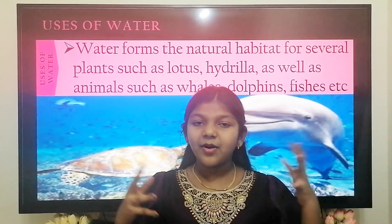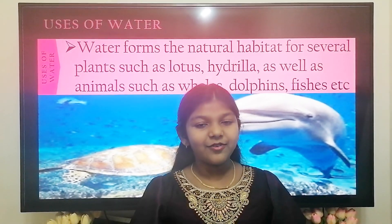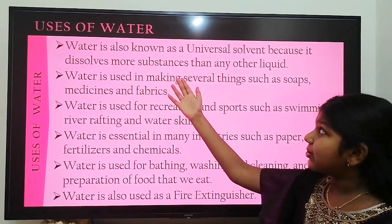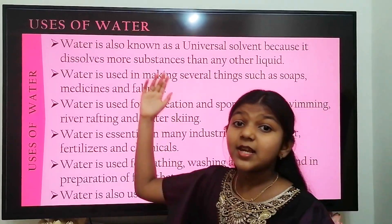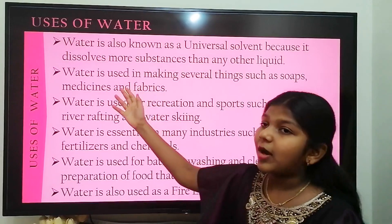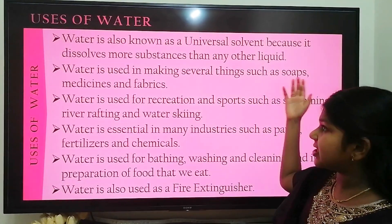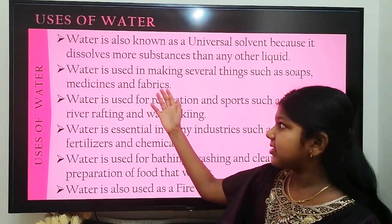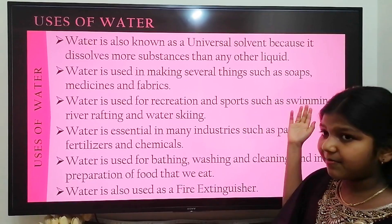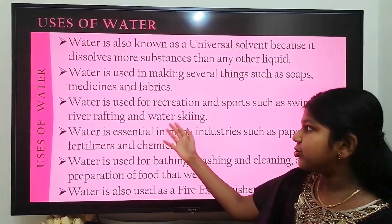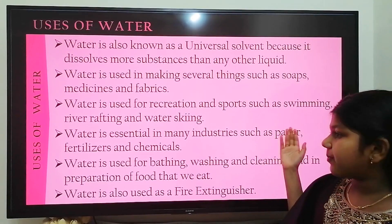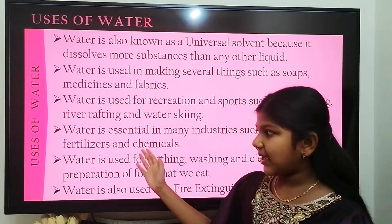Water forms a natural habitat for several aquatic plants such as the lotus, hydrilla, etc., and for some animals such as dolphins, whales, fishes, etc. Water is also known as a universal solvent because it dissolves more substances than any other liquid. Water is used in making several things such as soaps, medicines and fabrics. Water is used for recreation and sports such as swimming, river rafting and water skiing. Water is essential in many industries such as paper, fertilizers and chemicals.